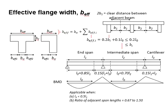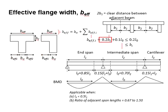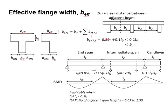The B_effective of the flange beam is determined using this equation. It is assumed as 20% of B1 plus 0.1 of L_node. This summation should be less than 20% of L_node, and it should be less than B_i. B_i represents half of the clear distance between the adjacent beams. L_node represents the distance from zero moment to the next zero moment.